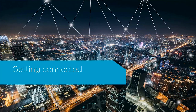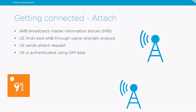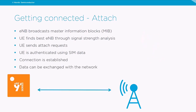To get connected, the eNB broadcasts master information blocks. The UE finds the best eNB by analyzing signal strength, then sends an attach request. The UE is authenticated using SIM data, a connection is established, and data can be exchanged with the network.